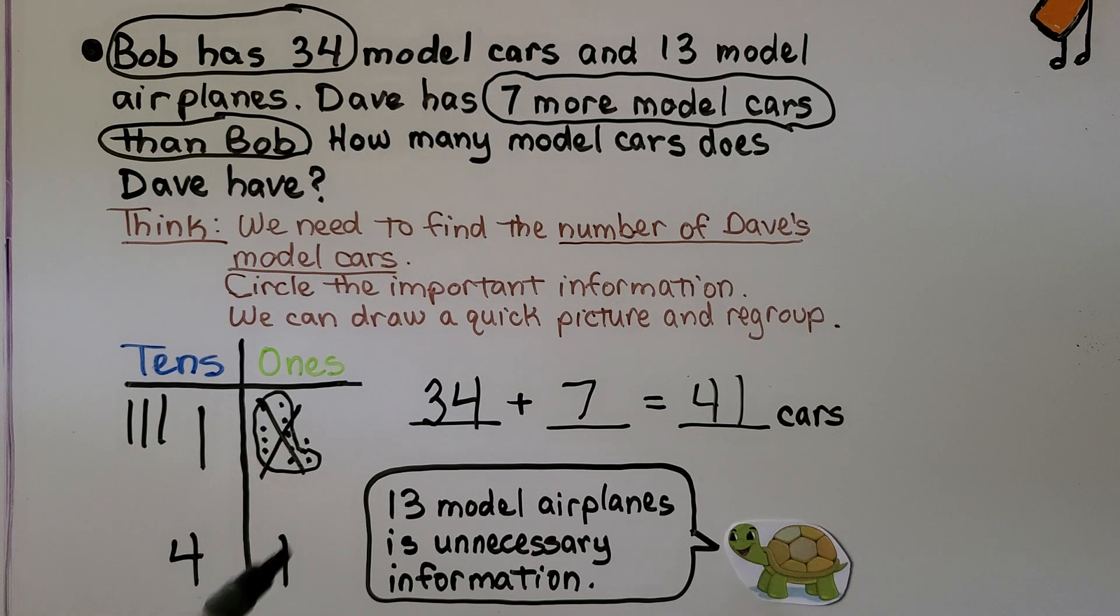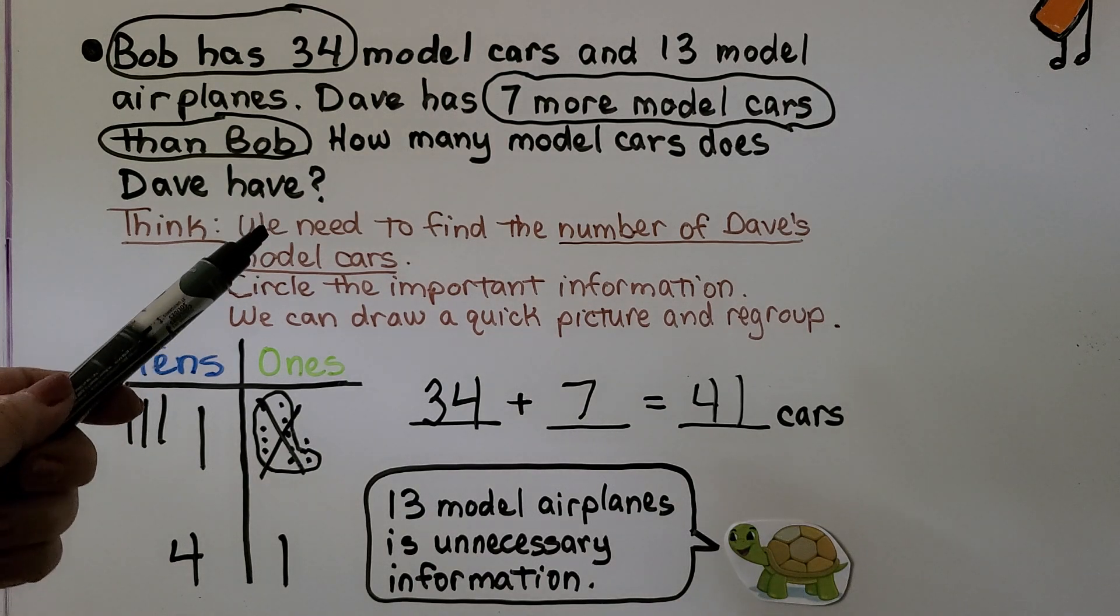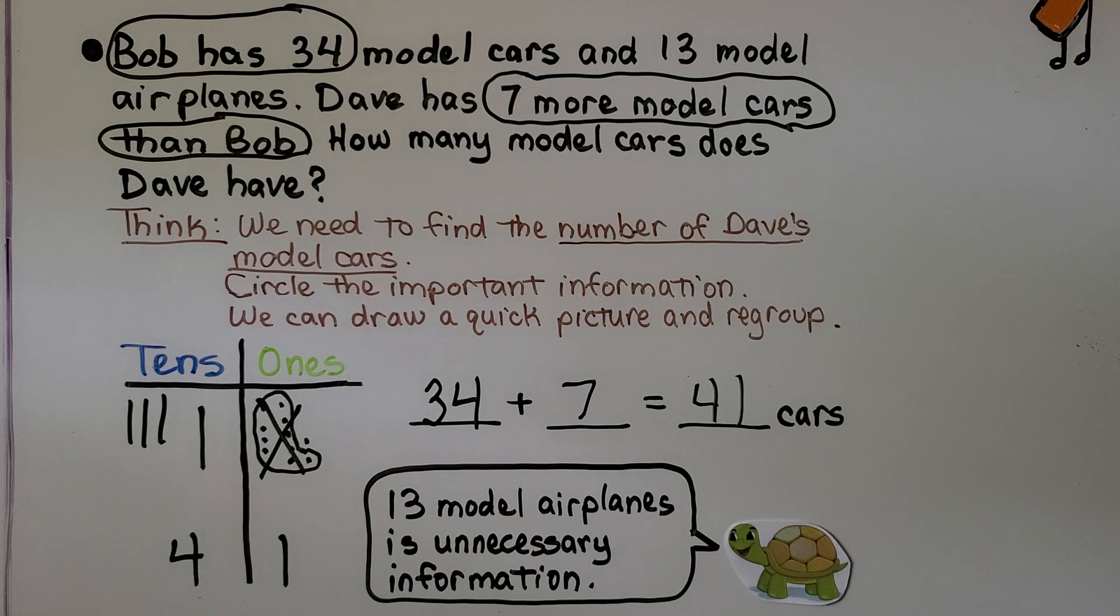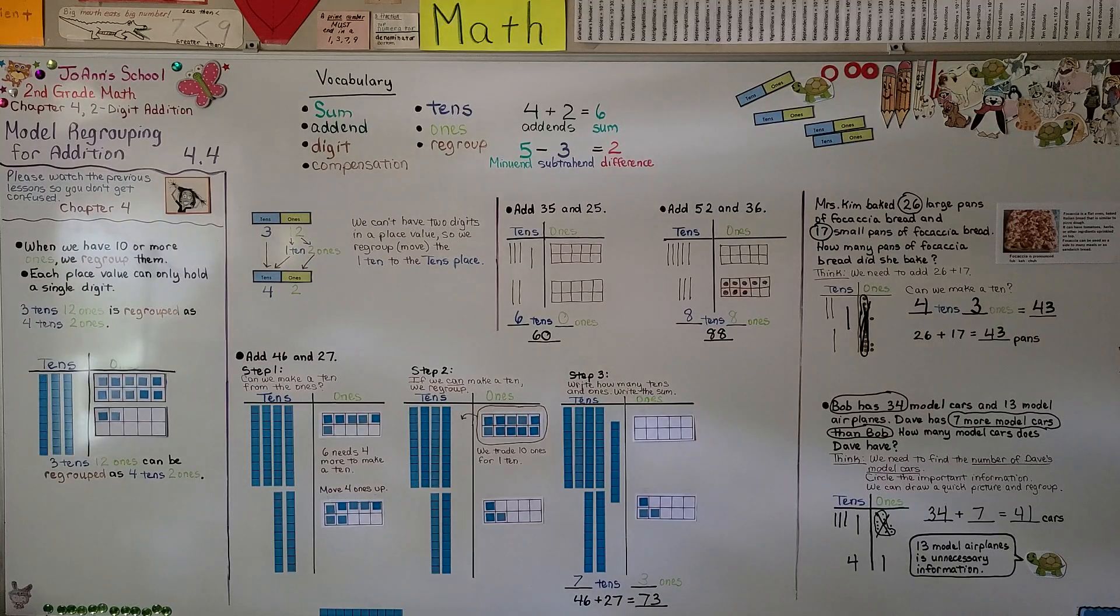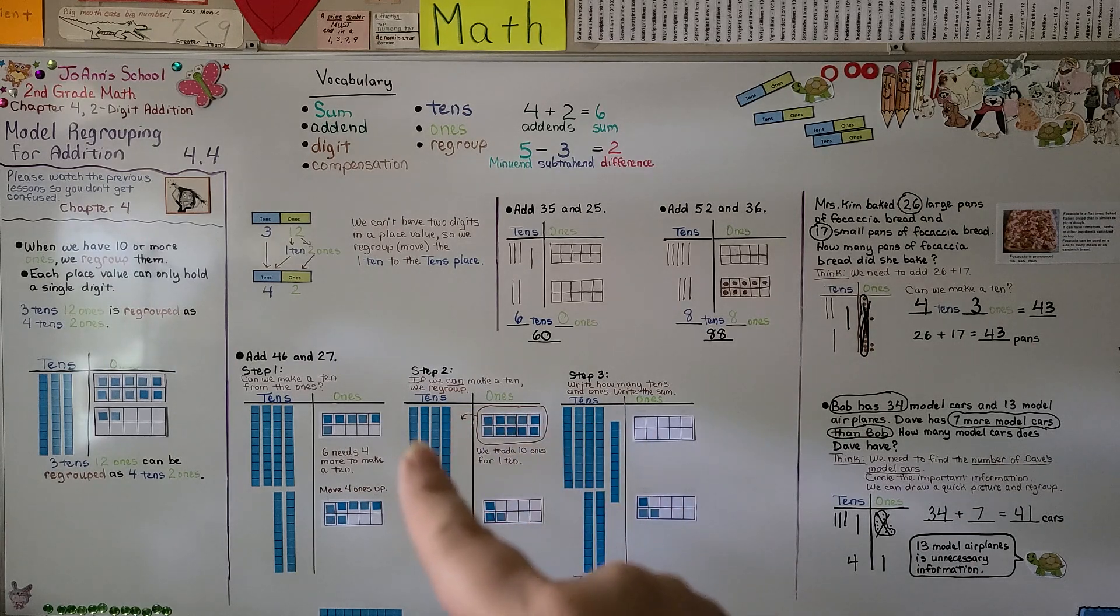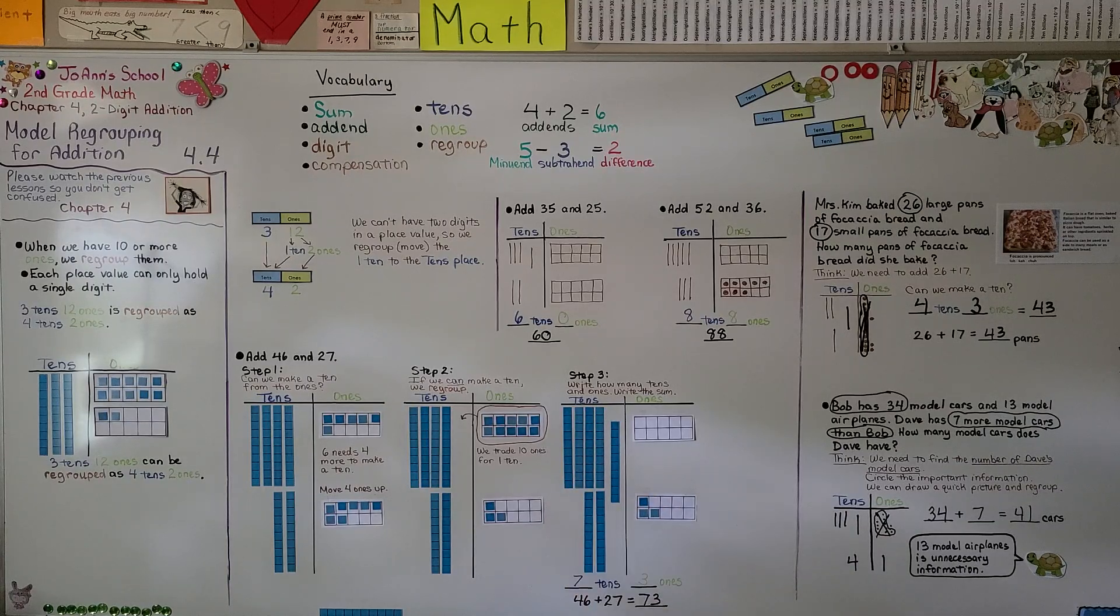Now do you notice what the turtle is saying? He said 13 model airplanes is unnecessary information. It said Bob has 34 model cars and 13 model airplanes. We didn't need to worry about the model airplanes because it didn't ask about that. That was information that wasn't needed. It was unnecessary. If we read the question very carefully, how many model cars does Dave have? We know what the question is and we know what we need to answer. We have to be very careful with word problems. We need to answer exactly what it's asking of us. As you're doing these, make sure you remember to include that regrouped 10. If we put the ones together to make a 10, we need to take them out of here so it's empty and put that 10 into the tens place. Got to include that and count it with the tens.